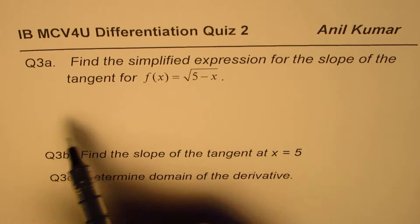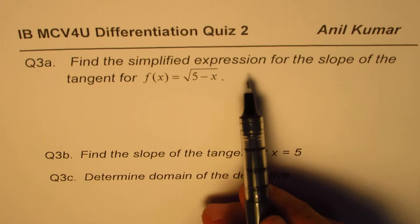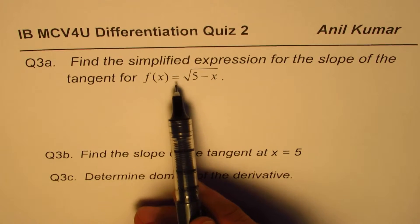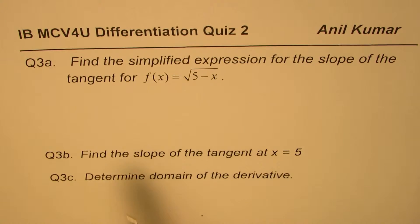Question number 3 is: find the simplified expression for the slope of the tangent for f(x) equals square root of 5 minus x. Part B is: find the slope of the tangent line at x equals 5. And part C is: determine the domain of the derivative.